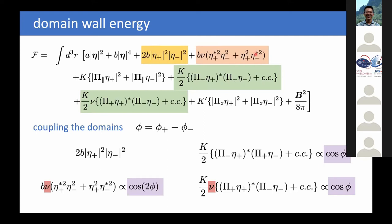Looking at how these coupling terms depend on the phase difference phi of the two order parameters: the first fourth-order term has no phase dependence. However, the second term has a phase dependence, as do the two gradient terms, but with different dependences: one has cos(2φ), the other cos(φ). Terms involving nu vanish when rotation symmetry holds and are only finite with crystalline anisotropy. If there is no energy dependence on the phase, there is no coherent coupling between the two sides, and no current can run through the domain wall like a Josephson junction.